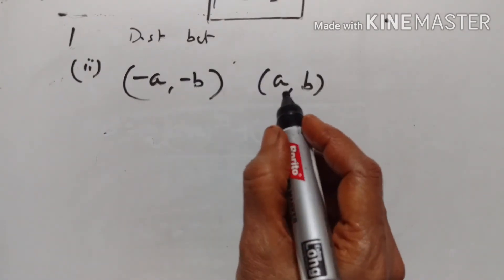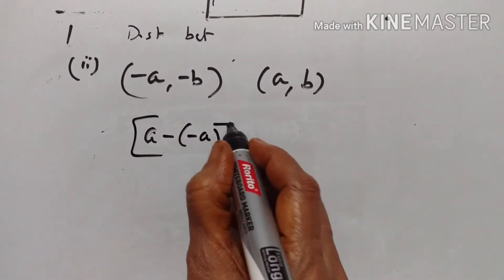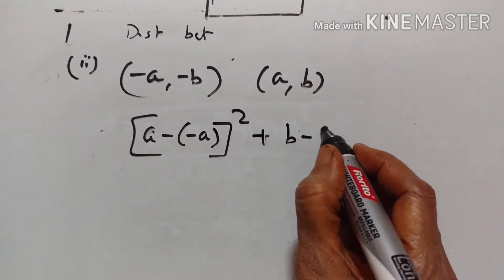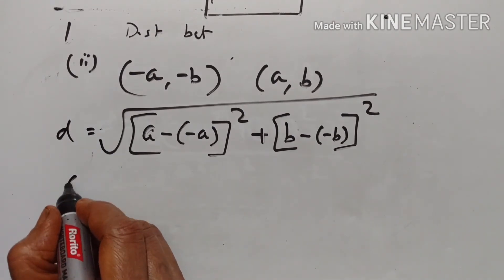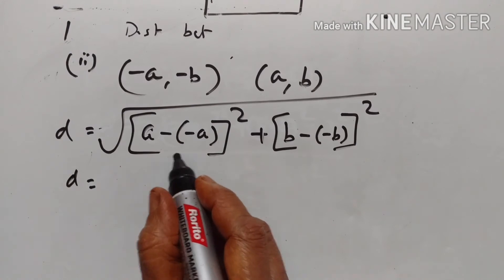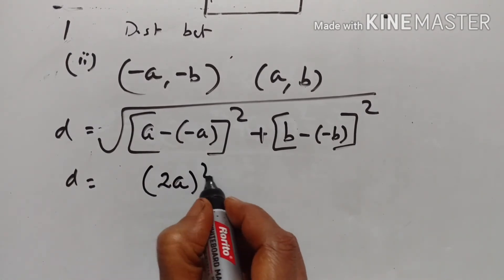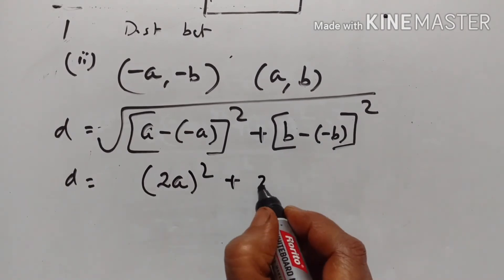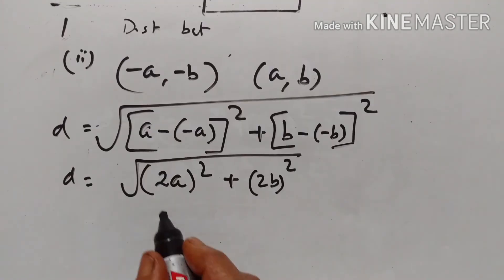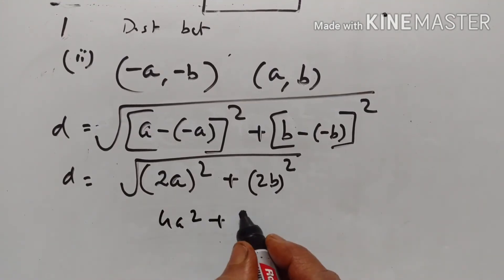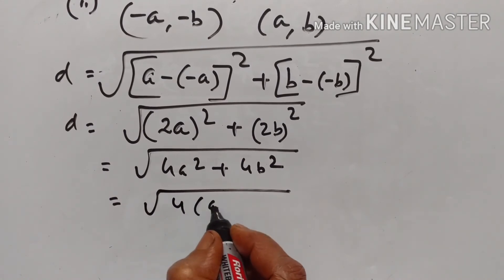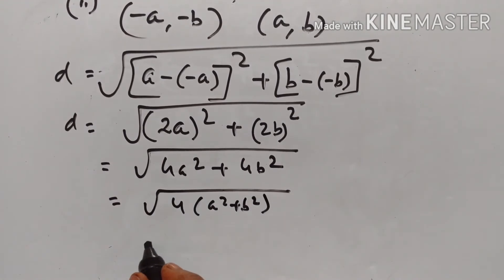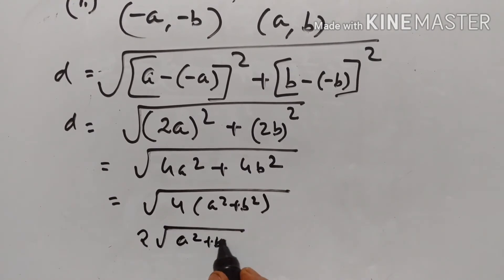Problem 2: Distance between points (a, -b) and (-a, b). x₂ - x₁ = a - (-a) = 2a, and y₂ - y₁ = b - (-b) = 2b. So d = √((2a)² + (2b)²) = √(4a² + 4b²). Taking 4 common: √(4(a² + b²)) = 2√(a² + b²).